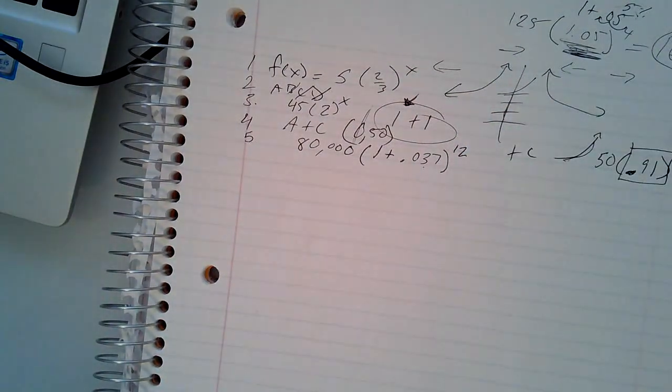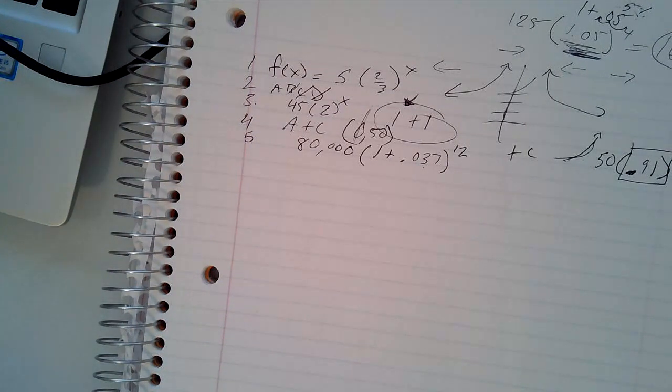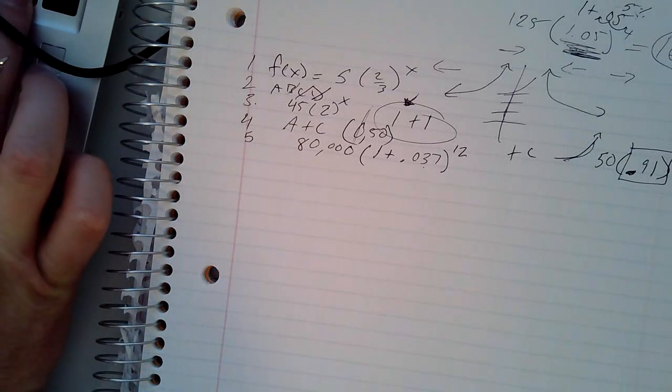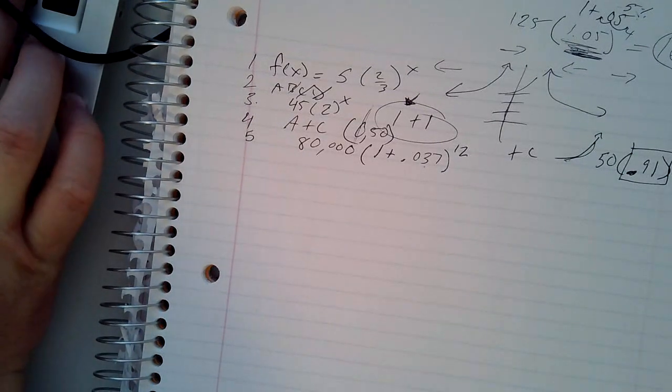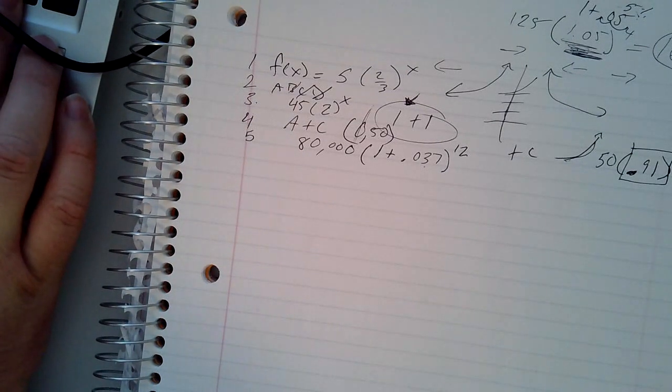So your answer would, and then in red, it says do not use commas. And it says rounded to the nearest whole number. So your answer would be 123718. You've got to read the instructions. You have to.